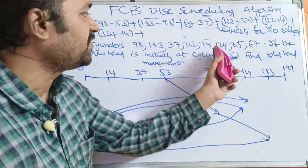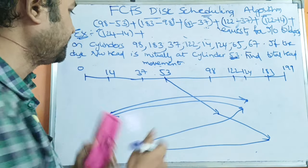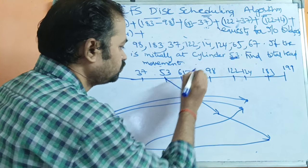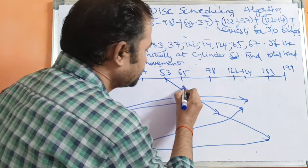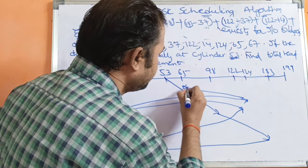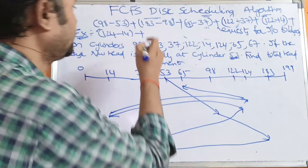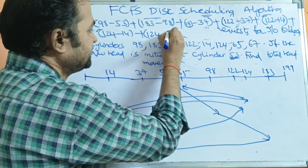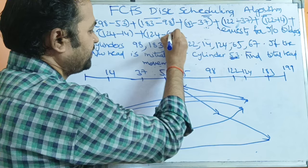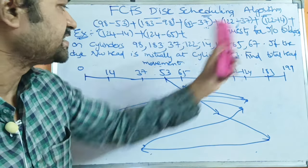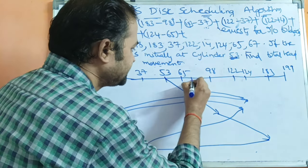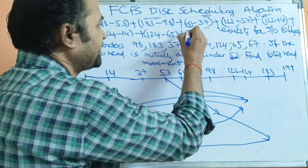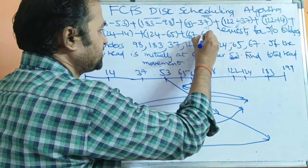After 124, we have to access cylinder 65. From 124 to 65, we compute 124 minus 65. Next, after 65 we have cylinder 67. So we compute 67 minus 65.